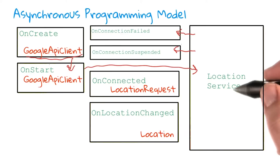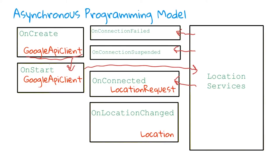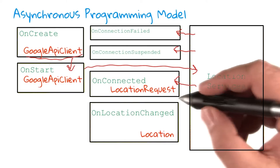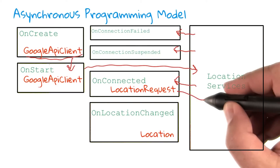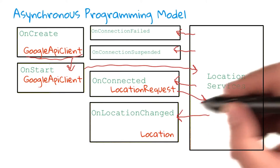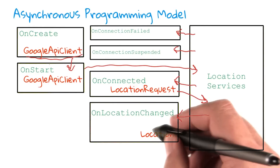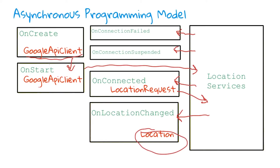When you succeed in making a connection to location services, location services calls back to onConnected, telling you that you're now connected to the services. In the case of something like location, you then create a location request that you'd pass to location services to get your location details back. It would call you back with onLocationChanged, letting you know that your location request details have changed and there's new location information available to you. And you'll get a location object, which you can then use to write to your screen.